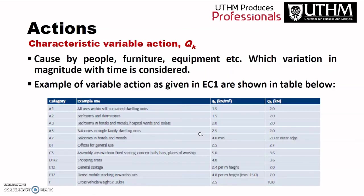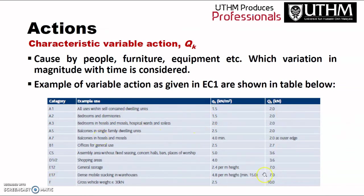Variable actions are caused by variable conditions — such as people, furniture, and equipment — where the variation in magnitude with time is considered. Examples of variable actions are given in Euro code 1 and shown in tables with categories A1, A2, A3, A5, A7, B1, C5, D1, E12, E17, and category F. You will refer to these tables when doing the design to determine the required Qk value.